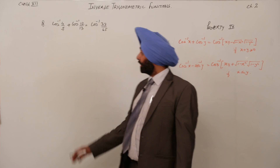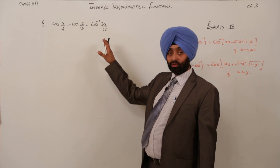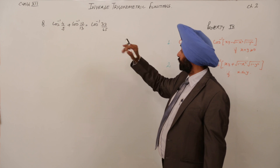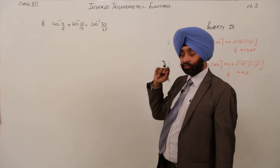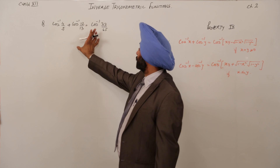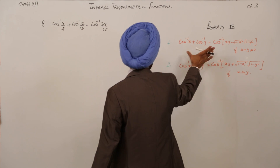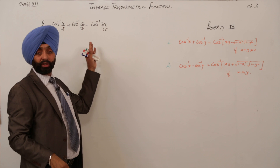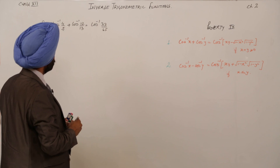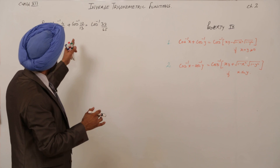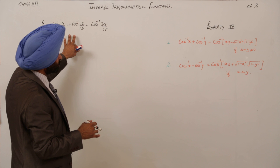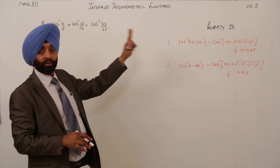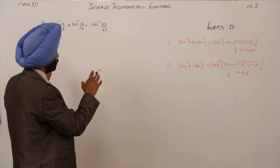I have written a question on the blackboard: cos⁻¹(4/5) + cos⁻¹(12/13) = cos⁻¹(33/65). We can easily solve this question using a property. This question also appeared in the 2010 board exams. What we are going to do is insert the values of X and Y into the property.